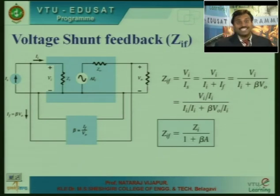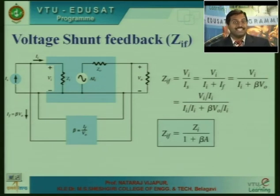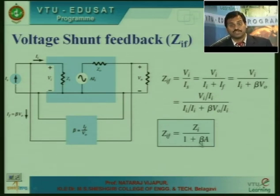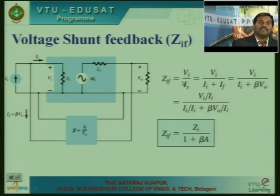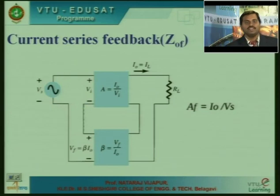Note that here the input impedance gets reduced — it is Z_i divided by 1 plus A times beta. This is in contrast to the previous voltage series feedback configuration, where the input impedance was improved.